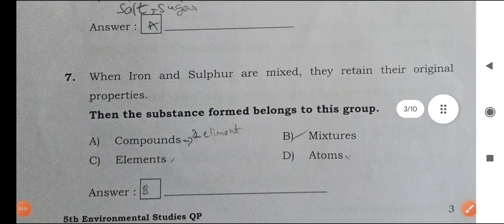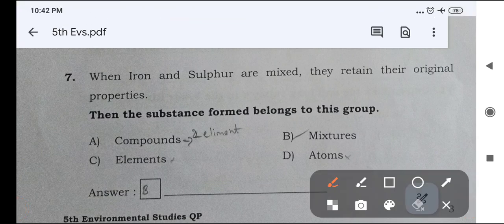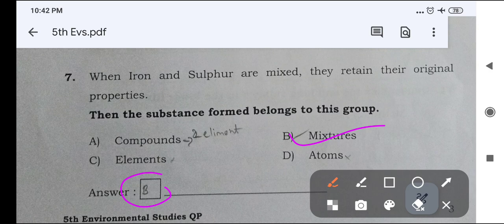Next one, when iron and sulfur are mixed, they retain their original properties. It is called mixture. When iron and sulfur are mixed, they retain their original properties. It means it was mixture. It is not elements. It is not compound. It is a mixture.